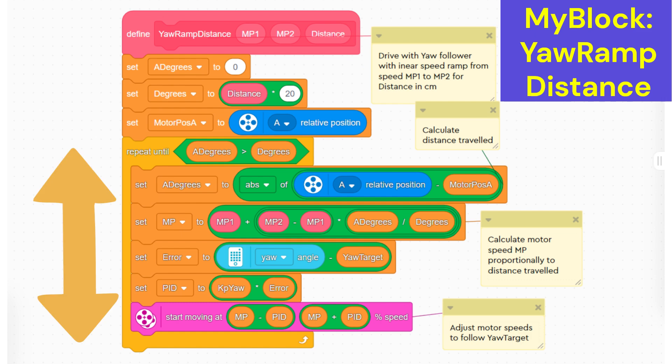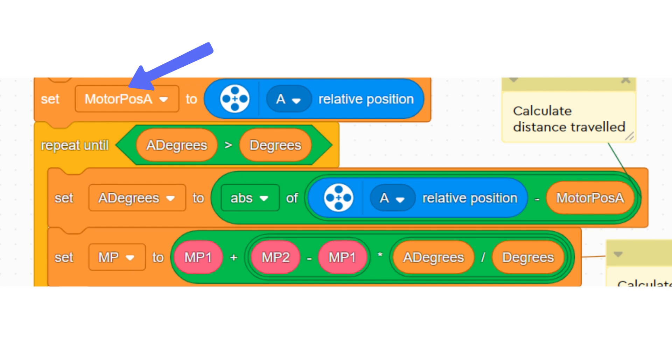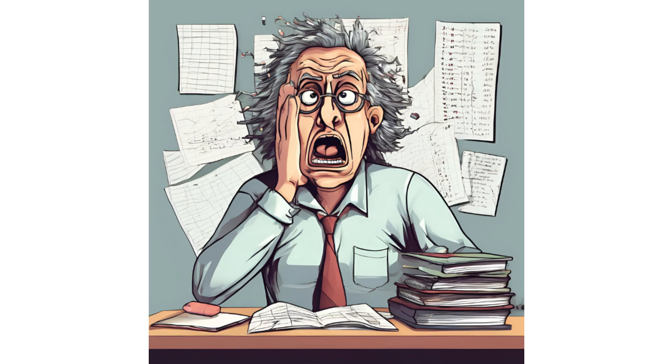We then stay in the repeat loop until we have completed the distance. We save the motor starting position in variable motor pos a. We subtract this from the current position to give the number of degrees travelled. We then calculate the speed in a similar manner to the time-based ramp. Using the absolute function enables us to ramp forwards and backwards. Let's look at the calculation.